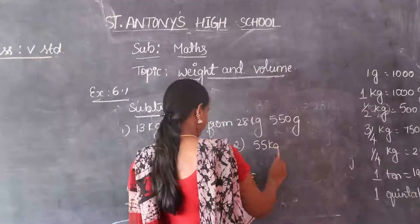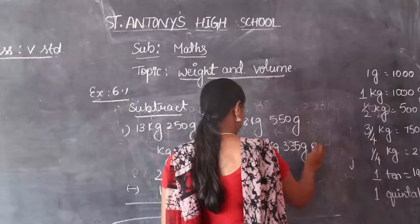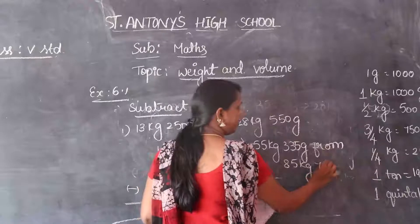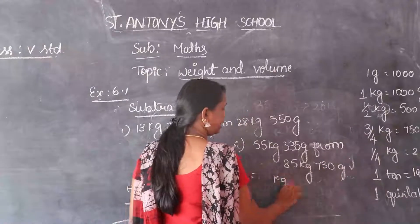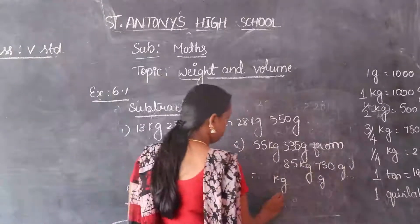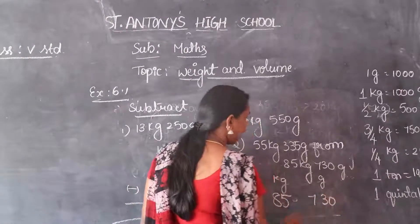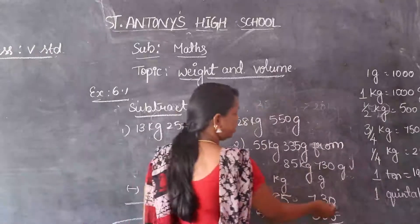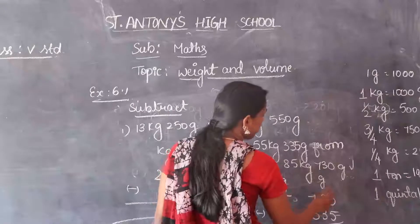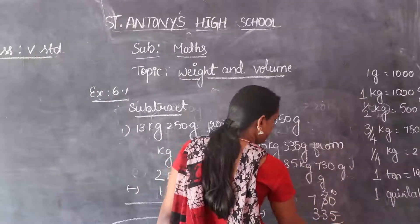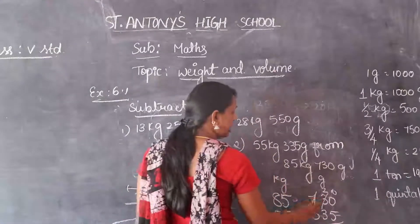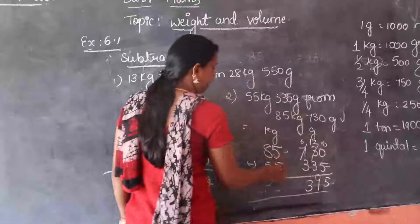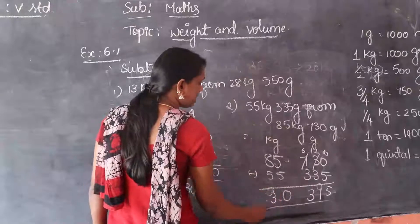Second one: subtract 55 kg 335 grams from 85 kg 750 grams. Write kg and gram columns — 85 kg 750 grams minus 55 kg 335 grams. 0 minus 5 is not possible; take borrow from nearest — 7 becomes 6, 0 becomes 10; 10 minus 5 is 5. Also 2 becomes 12; 12 minus 3 is 9, 6 minus 3 is 3, 5 minus 5 is 0, 8 minus 5 is 3. Answer is 30 kg.